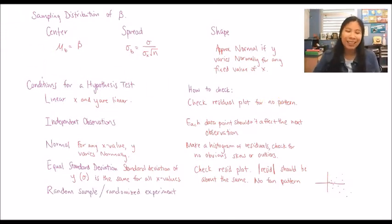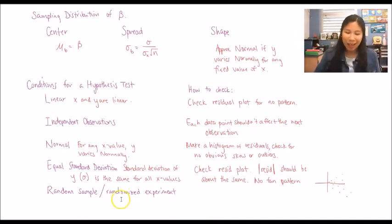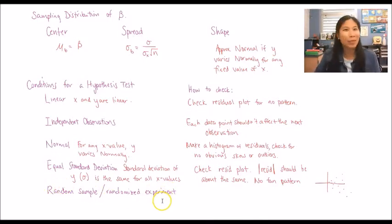The R is our favorite — random sample. We just need to check for a random sample or a randomized experiment. This one is easy: look in the problem to see if it states a randomized experiment or random sample. That's it.